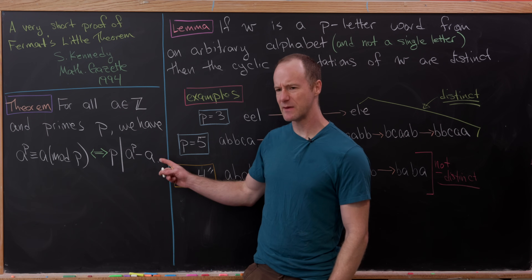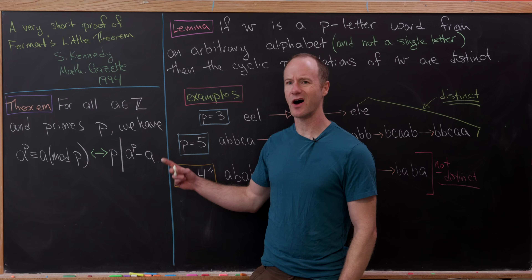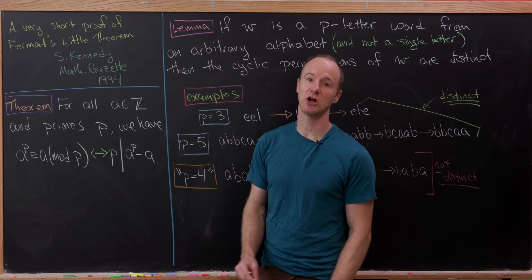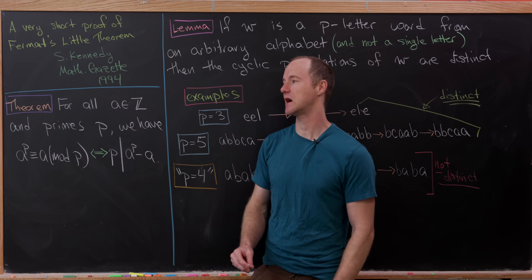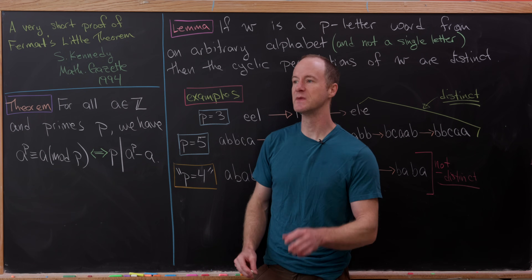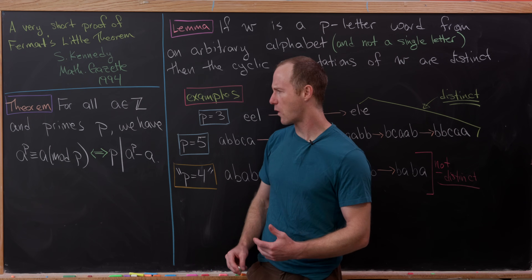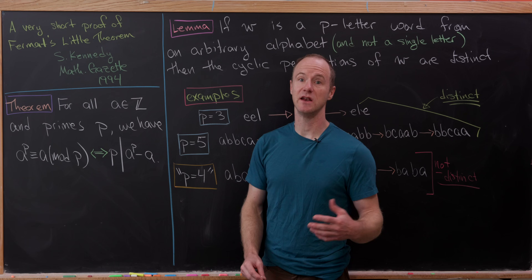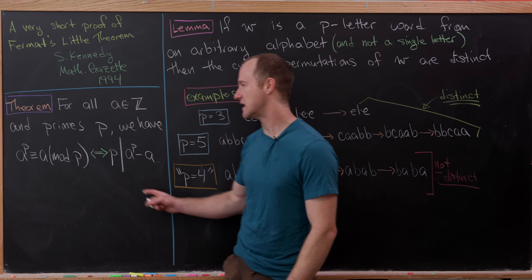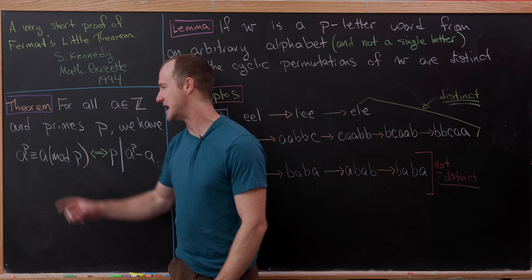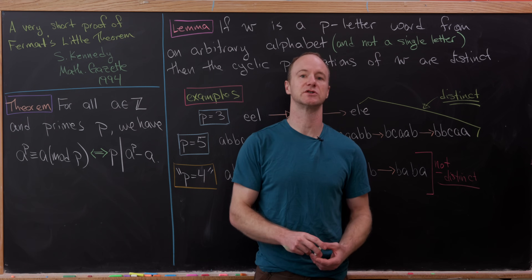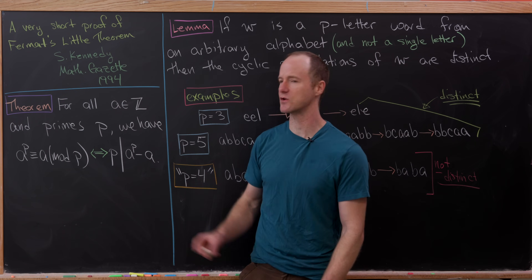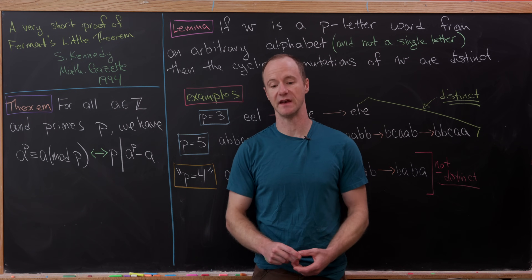Now this is maybe non-standard, but an alternative way to write down Fermat's Little Theorem. Sometimes we also require that a not be divisible by p, and then we have a to the p minus one is congruent to one mod p. But the first version will be the one we prove today.